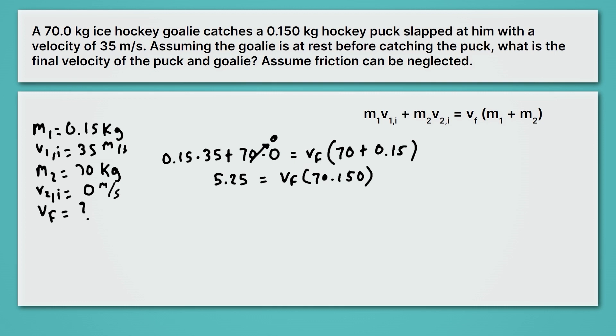So if we want to solve for velocity final, we just need to divide both sides by 70.15. 70.15 will cancel out on the right, and we'll be able to solve for velocity final. 5.25 divided by 70.15 gives me 0.0748. And let's round for sig figs here. The numbers that we're given have two sig figs at the least precise. So we'll keep one, two here. That eight there is going to make us round up. So we'll get, once we round, 0.075 meters per second for our velocity final. So that's the final velocity of our puck and our goalie who are now drifting towards that goal.